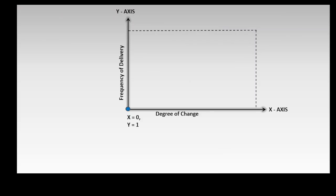So, in summary, from the Agile Practice Guide, in this two-dimensional graph, the degree of change increases along the X-axis, while the frequency of delivery increases along the Y-axis. At the point where the axes intersect, the degree of change is zero and the frequency of delivery is one.